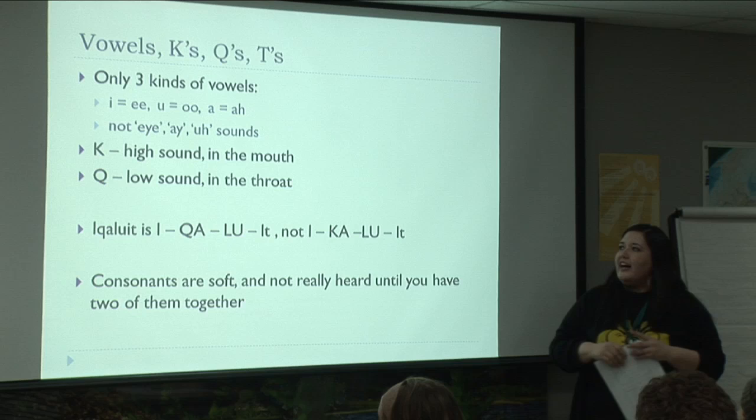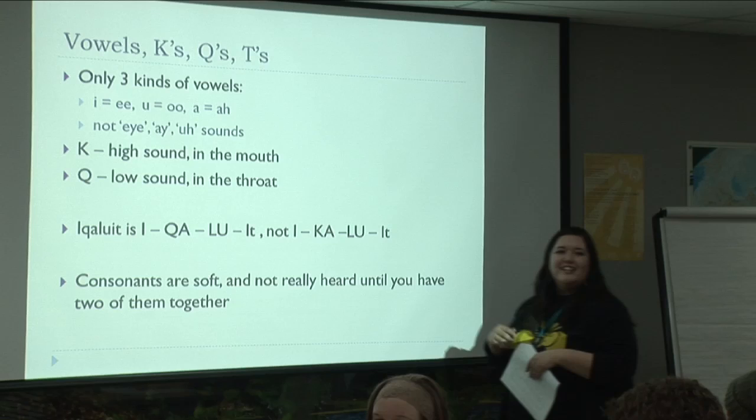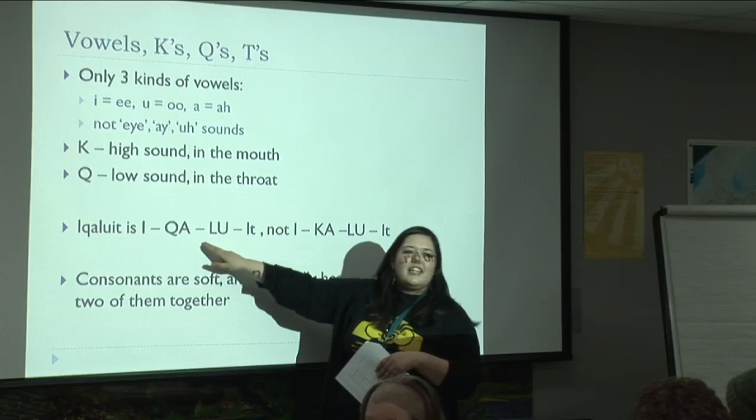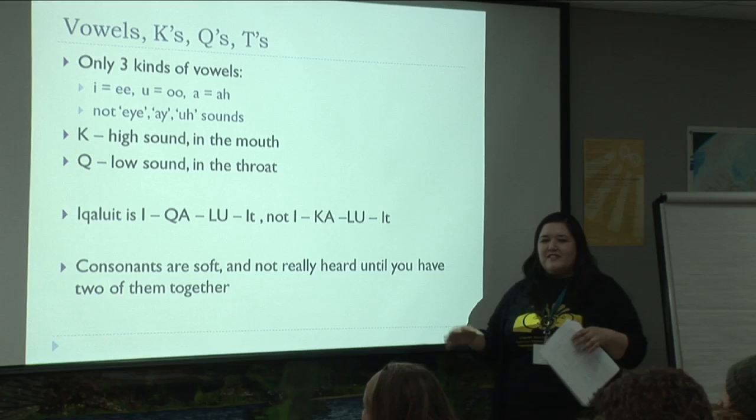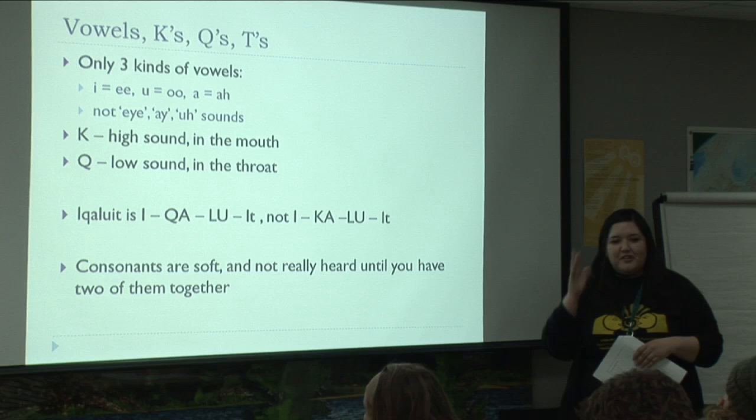Ks are a high sound in the mouth, and Qs are lower and more in the throat. Everyone say K — and K. So it's further down in your throat. Everyone try this: it's Iqaluit. I-qa-lu-it. Some people, if they can't do the Q really well, try to turn it into a K sound — like Ikaluit. That's a little cheat.